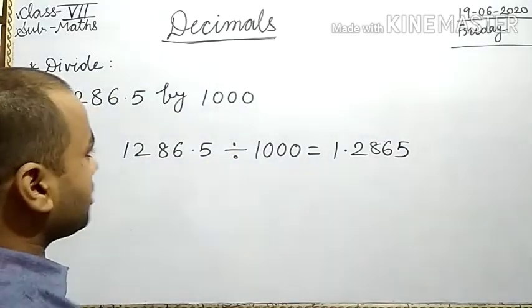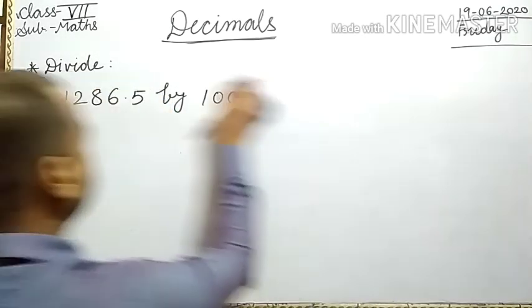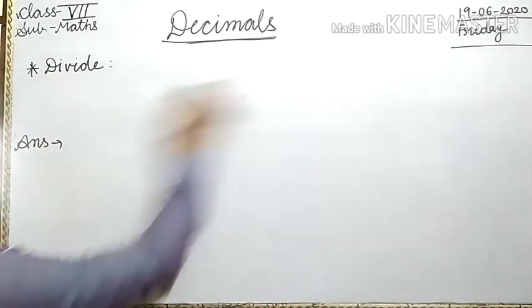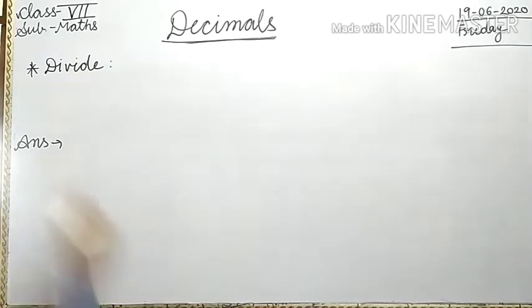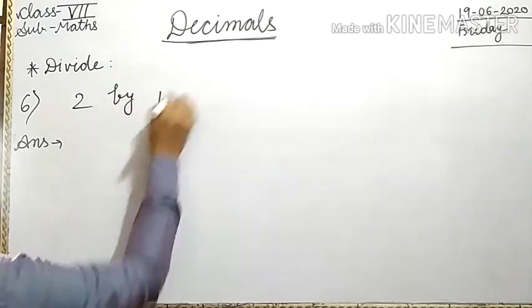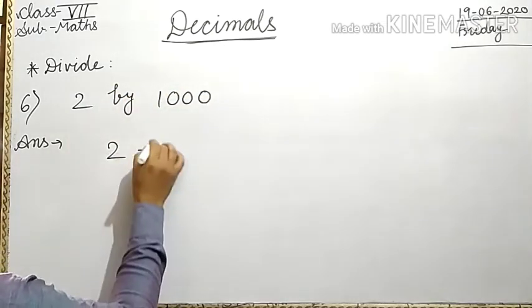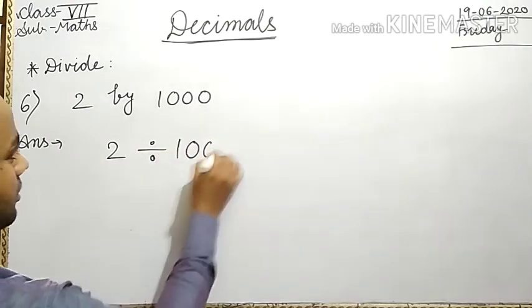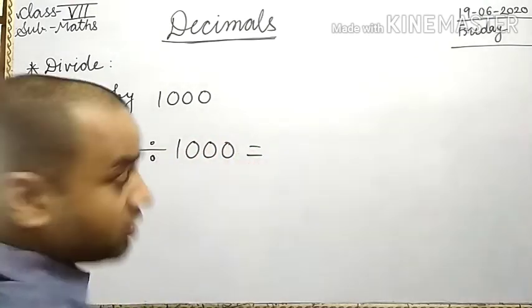Next question, question number 6: 2 divided by 1000. We write 2 divided by 1000.